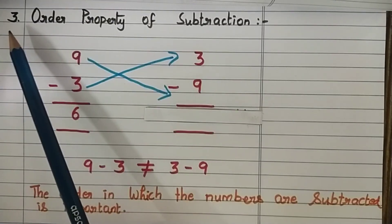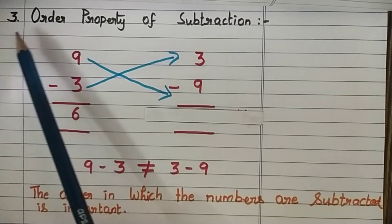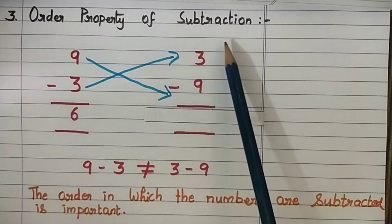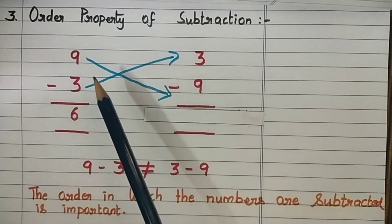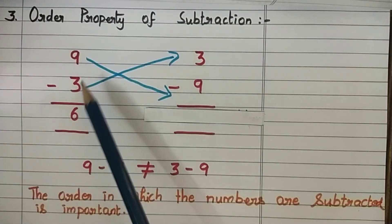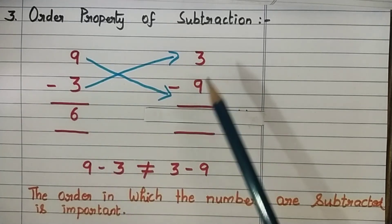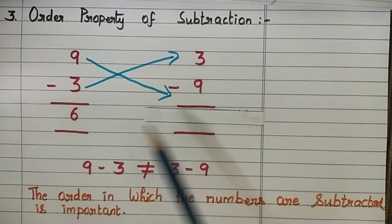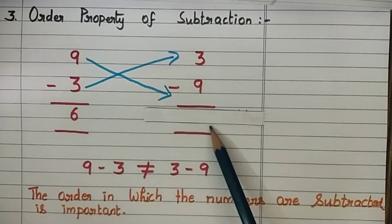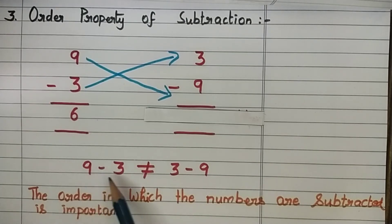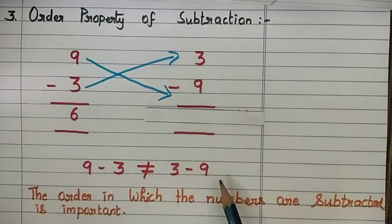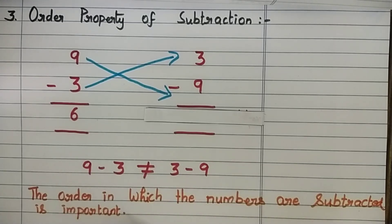Let us see the third property: order property of subtraction. Let us take the numbers 9 and 3. When we subtract 9 minus 3, or 3 minus 9, we will not get the same difference. Because 9 minus 3 is not equal to 3 minus 9. Thus, it tells us that the order in which the numbers are subtracted is important.